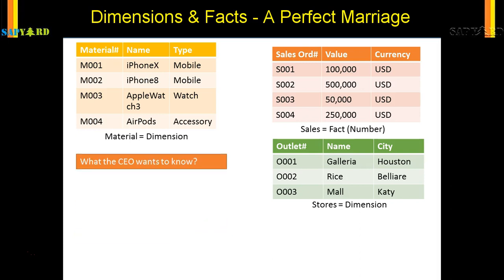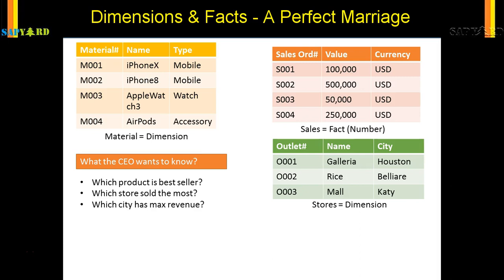The stakeholders — managers, regional managers, or the CEO — would like to know which product is the best seller for the quarter, which stores sold the most in the current year, or which city has the maximum revenue.